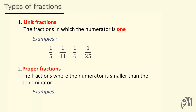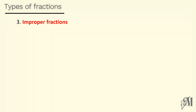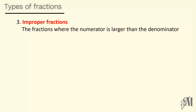Proper fractions are fractions where the numerator is smaller than the denominator. Look at these examples — you can see 2 over 5. Here 2 is smaller than 5, so it comes under proper fractions.